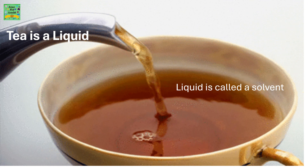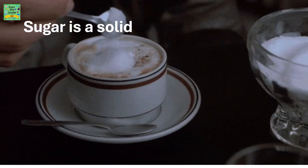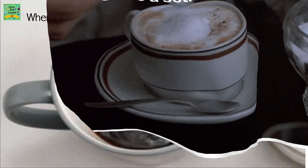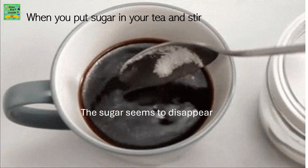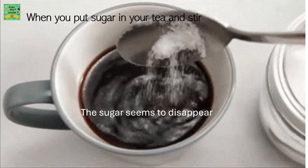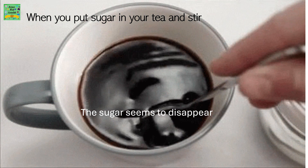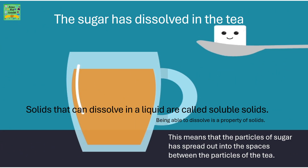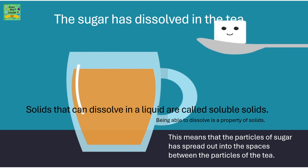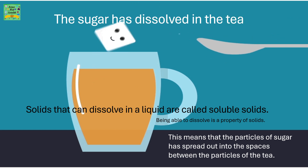Tea is a liquid — a liquid is called a solvent. Sugar is a solid, so it's called a solute. When you put sugar in your tea and stir it, the sugar seems to disappear. You cannot identify where the sugar is present. That is because the sugar has dissolved in the tea. Solids that can dissolve in a liquid are called soluble solids. Being able to dissolve is a property of solids. This means that the particles of sugar have spread out evenly into the spaces between the particles of the tea.